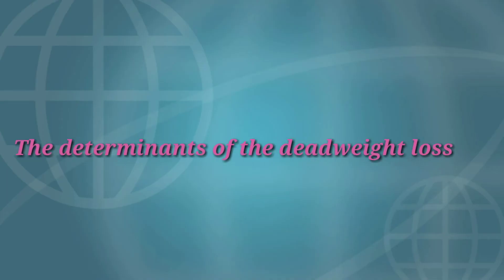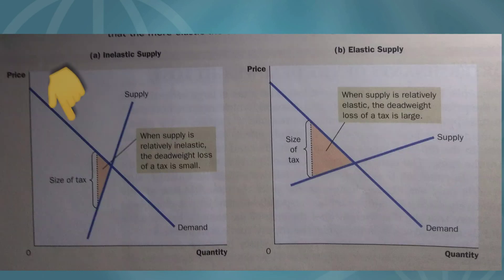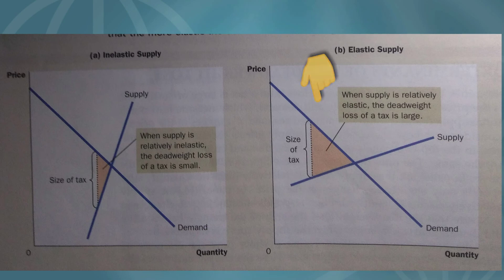The determinants of the deadweight loss. What determines whether the deadweight loss from a tax is large or small? The answer is the price elasticity of supply and demand, which measures how much the quantity supplied and quantity demanded respond to changes in the price. Consider how the elasticity of supply affects the size of the deadweight loss. In panel A, the supply curve is relatively inelastic, so quantity supplied responds only slightly to changes in the price. In panel B, the supply curve is relatively elastic, so quantity supplied responds substantially. The deadweight loss — the area of the triangle between the supply and demand curves — is larger when the supply curve is more elastic.